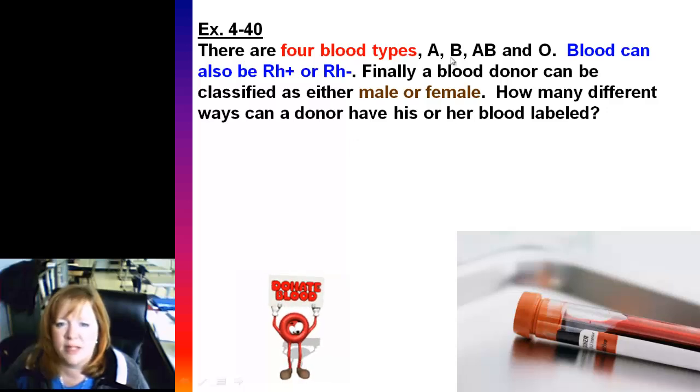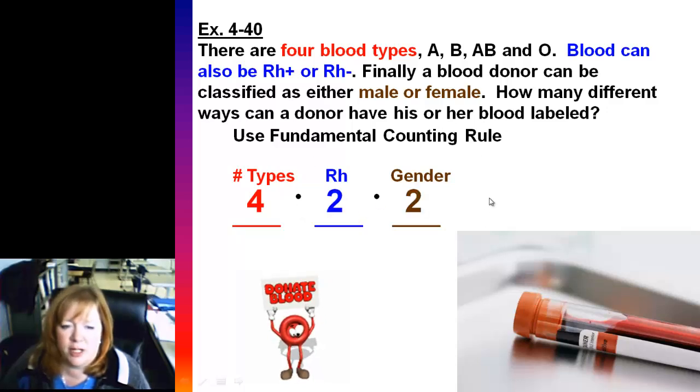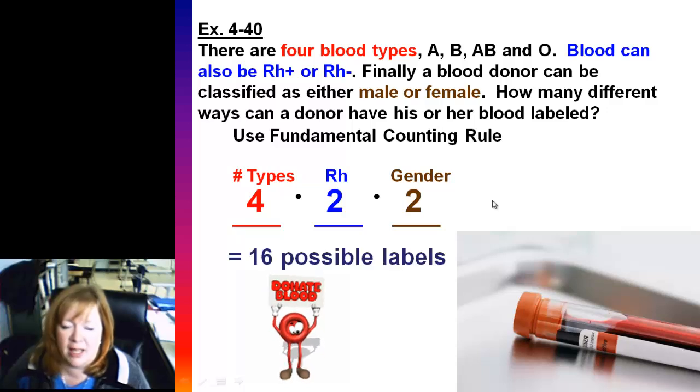Four blood types: A, B, AB, and O. And you could also be Rh positive or negative. You could also be a male or a female. So they want to know how many different labels you can make, how many different types of labels. Again, you've got three different things: the number of types, the Rh, and the gender. So I put three blanks, and then there's four blood types, so a four would go there. There's two different Rh types, and gender, we're going to put a two. Multiplying those all out, you end up with 16 possible labels.